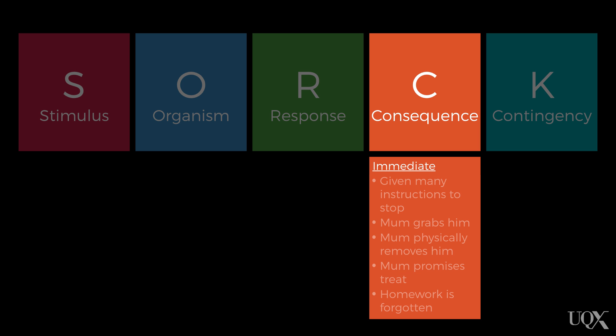What happens for both mum and for Jamie? Jamie is given multiple instructions to stop. Mum tells his sister to leave the room in order to protect her. Mum tries to physically contain Jamie and wrestles the corkscrew from him. Mum then physically removes Jamie to his bedroom.